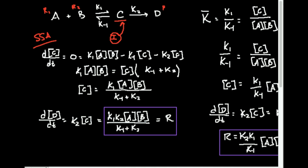There is one very important assumption in the steady-state approximation, and for different reactions it has different levels of validity. The assumption is that the intermediate's concentration does not change with time. We quantify this as the derivative of the concentration of C with respect to time. We're saying that change equals zero — but that does not mean the concentration of C is zero. The concentration of C is some finite number greater than zero; we're saying its rate of change with time is zero.